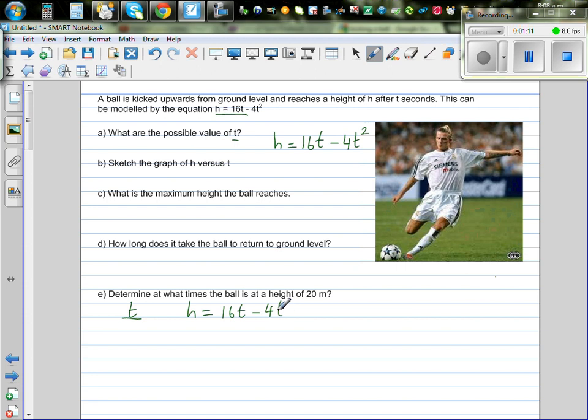So let's make up a column of values. So when t is 0, that means when the ball was kicked. So here you put 0 in this, so it will be 0. So 16 times 0 is 0, minus 4 times 0 squared is 0. So this doesn't make sense. At time 0 when the ball was kicked, where was the ball? The ball was on the ground.